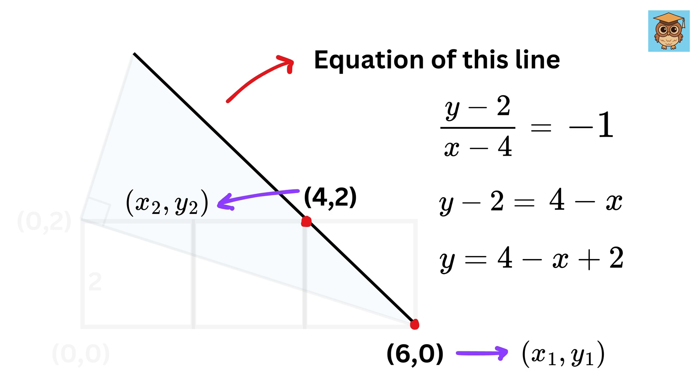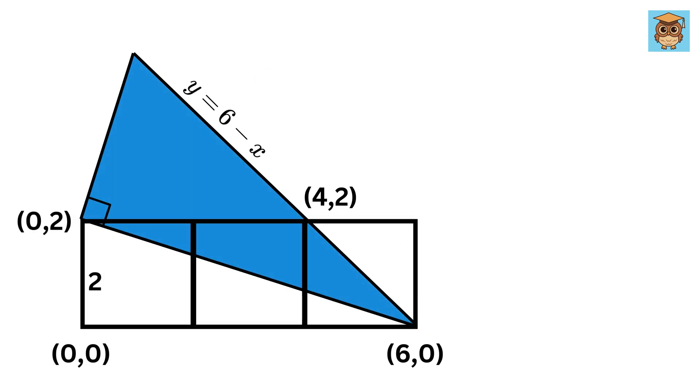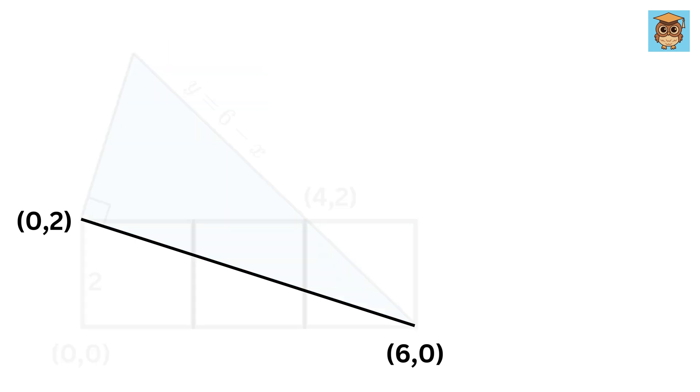Now in order to find the coordinate of this vertex of the triangle, next we will consider this line. The slope of this line will be given as two minus zero upon zero minus six, or minus two by six, or minus one by three.